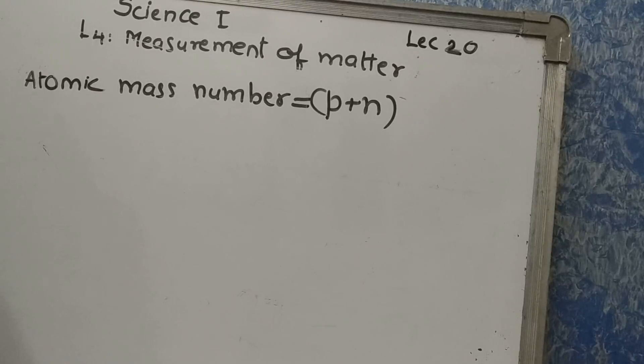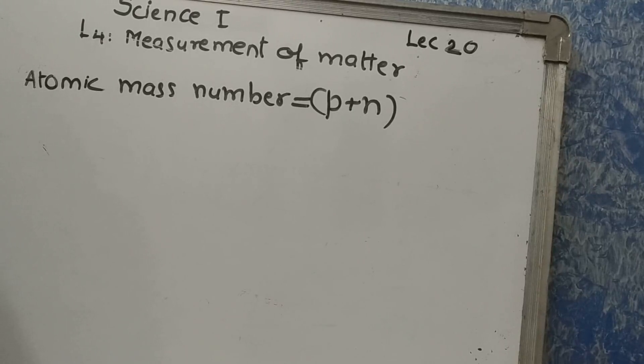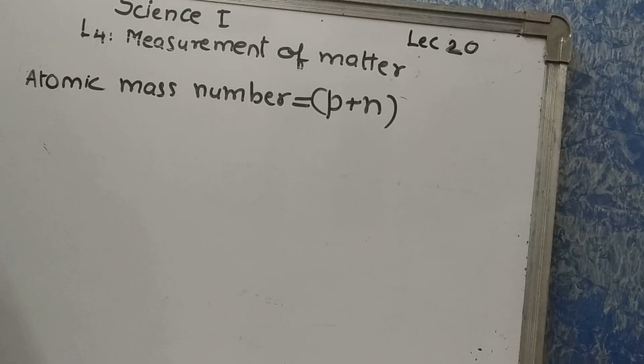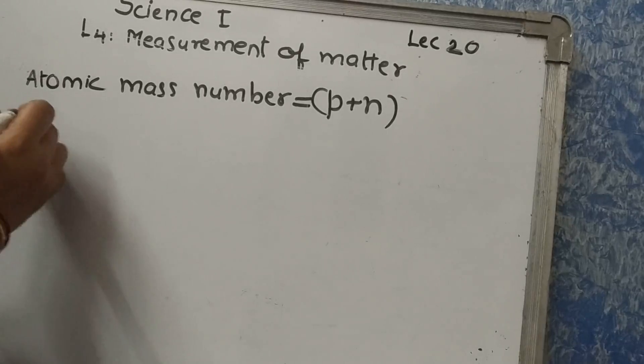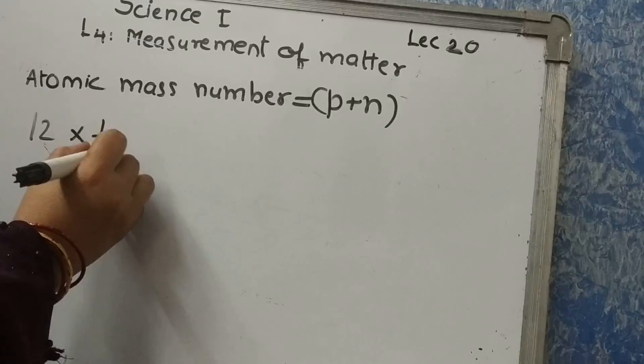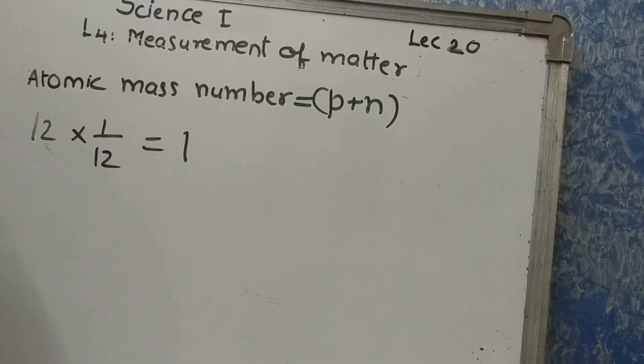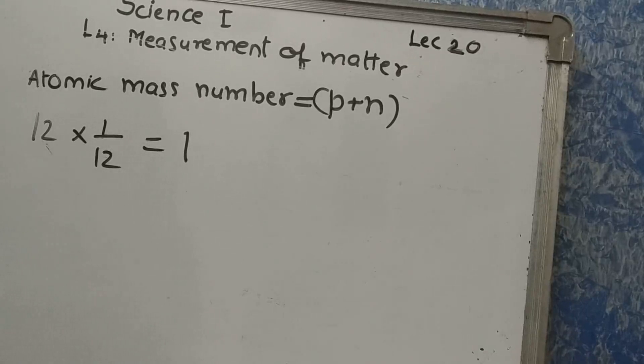Finally, in 1961, the carbon atom was selected as reference atom. The relative mass of a carbon atom was accepted as 12. The relative atomic mass of one hydrogen atom compared to the carbon atom becomes 12 multiplied by 1 upon 12, that is equal to 1. Mass of the proton and one neutron on the scale of relative atomic masses is approximately 1.